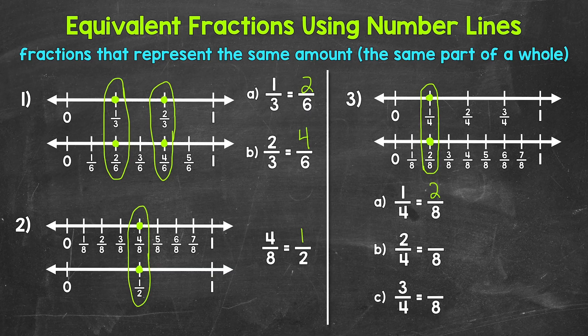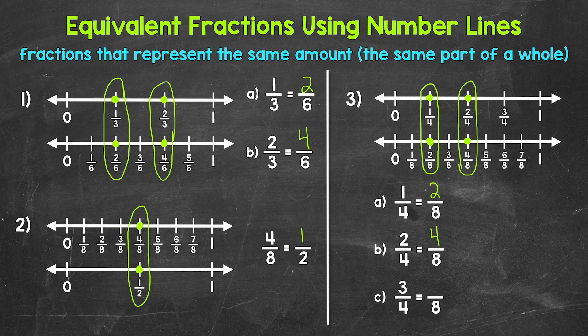Now let's move on to B, where we have 2 fourths is equivalent to how many eighths? 2 fourths is right here on the number line. Looking right below, we can see that 4 eighths is at the same place. 2 fourths and 4 eighths are equivalent fractions.